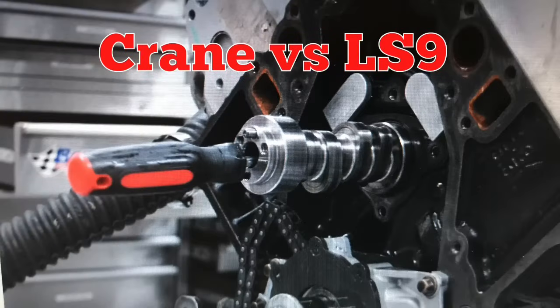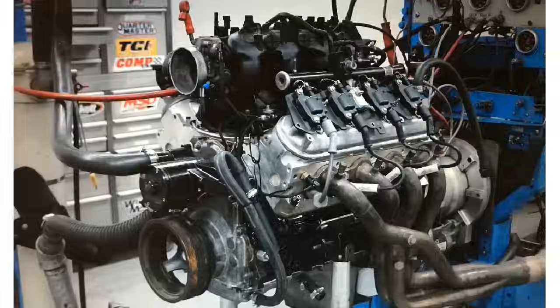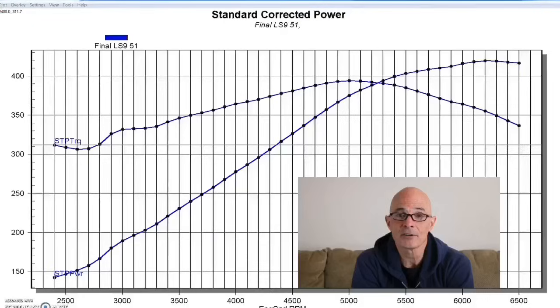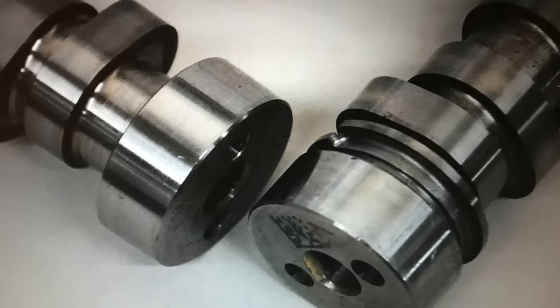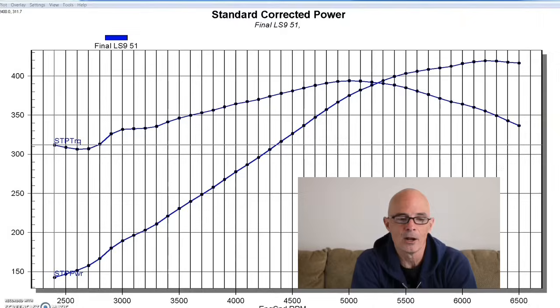The first test in our discussion on lobe separation angle is a comparison I did back when I did the original stock cam test where we tested all the factory LS cams. When I did that, we ran all of the LM7, LS1, 2, 3, 4, 5, 6, 7, 8, 9, 10, you name it. We ran all of them.